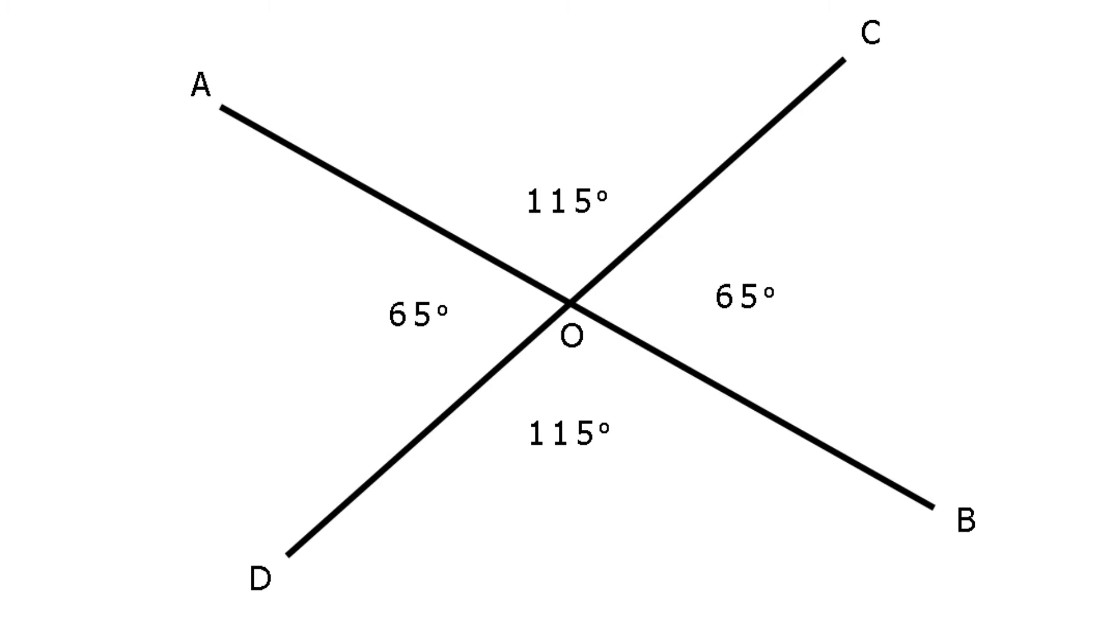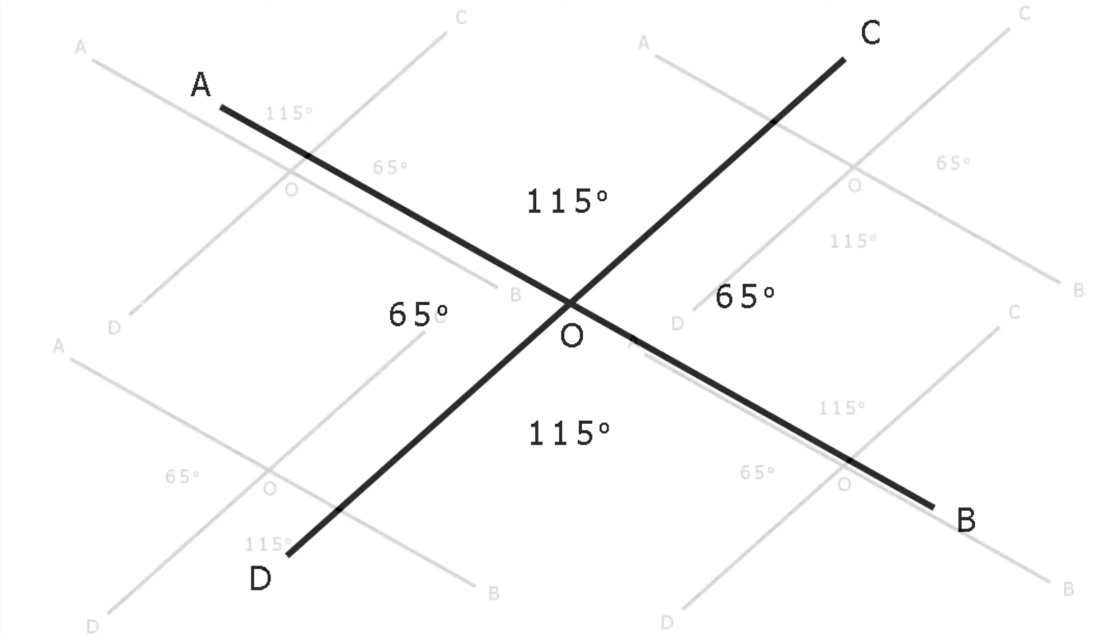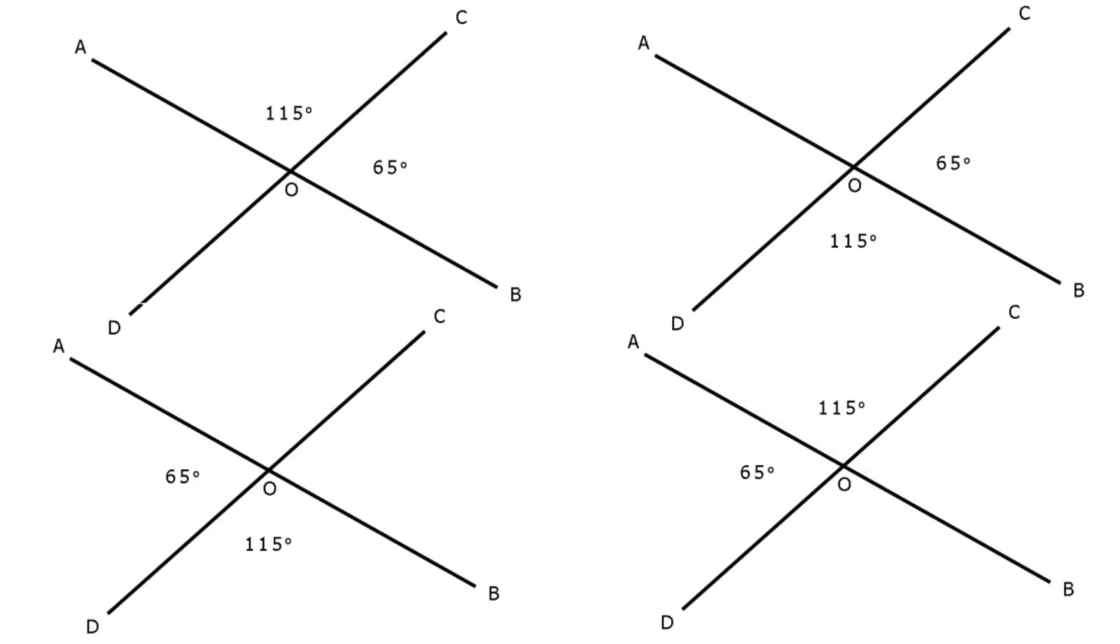If we put some numbers in our example, you might notice something. Remember angles in a straight line are supplementary, that's they add to 180 degrees. Well, here we have four pairs of supplementary angles: angle AOC plus angle BOC, angle BOC plus angle BOD, angle BOD plus angle AOD, angle AOD plus angle AOC.